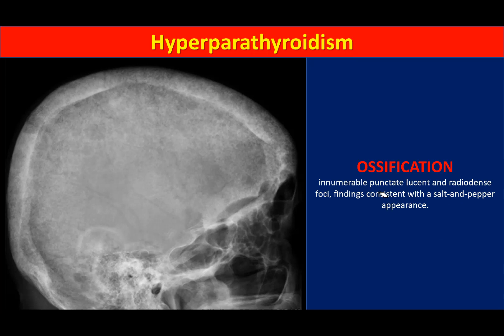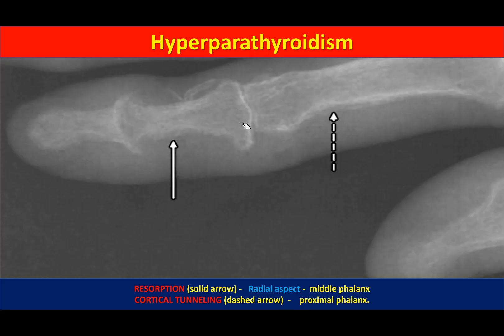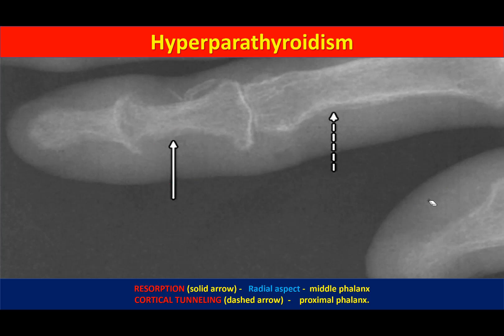In the skull, hyperparathyroidism produces the classic 'salt and pepper' appearance. The white dots represent trabecular bone (the salt) while the black areas represent resorbed, uncalcified osteoid (the pepper). Subperiosteal resorption can be seen on the radial aspect of the index finger, and cortical tunneling representing intracortical resorption can also be identified.